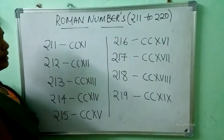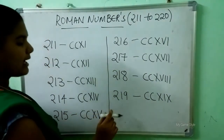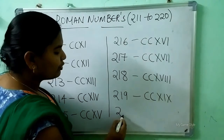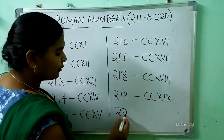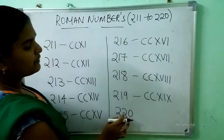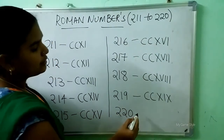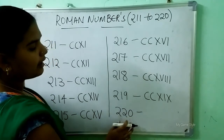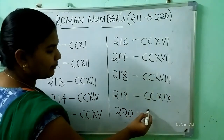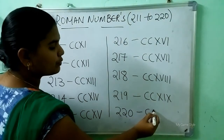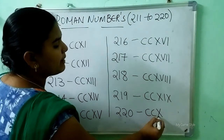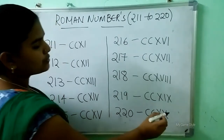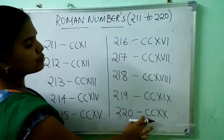After 219, which number comes here? 220. So how to write 220 here? Double C is 200, and double X is 20. So this means 220.